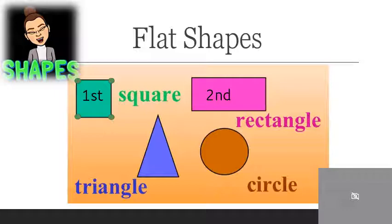And the rectangle has 1, 2, 3, 4 corners, and 1, 2, 3, 4 sides. Our third shape is the triangle.